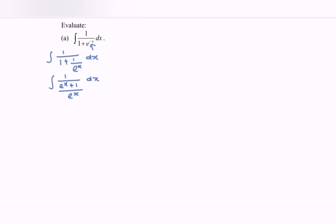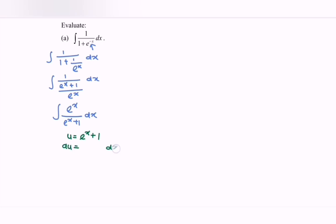So rewrite the situation again. So integrate we have e to the x over e to the x plus 1 with respect to x. So by using the substitution method, let u equal e to the x plus 1. So differentiate u with respect to x: we have du and dx. Differentiate e to the x and we have e to the x.